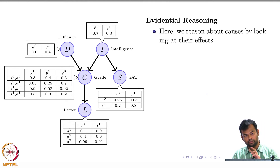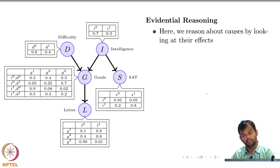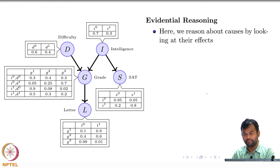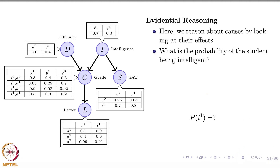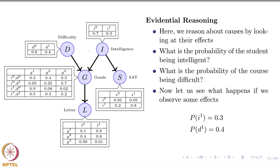The other kind of reasoning is the reverse—this is called evidential reasoning, where we reason about causes by looking at their effects. For example, the probability of someone being intelligent given that they got a good or bad recommendation letter. You have seen some effects, and you are trying to reason about the different causes that could have produced them—very important in medical diagnosis. The prior probability of someone being intelligent is 0.3, and the probability of the course being difficult is 0.4.